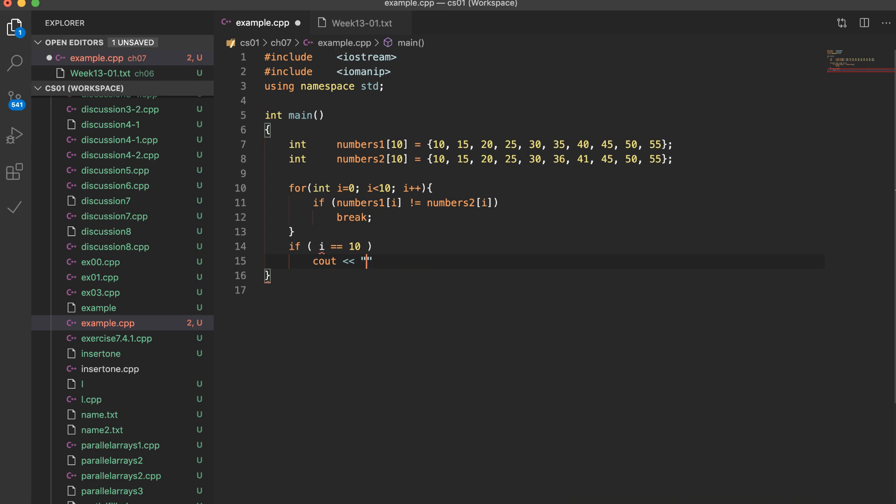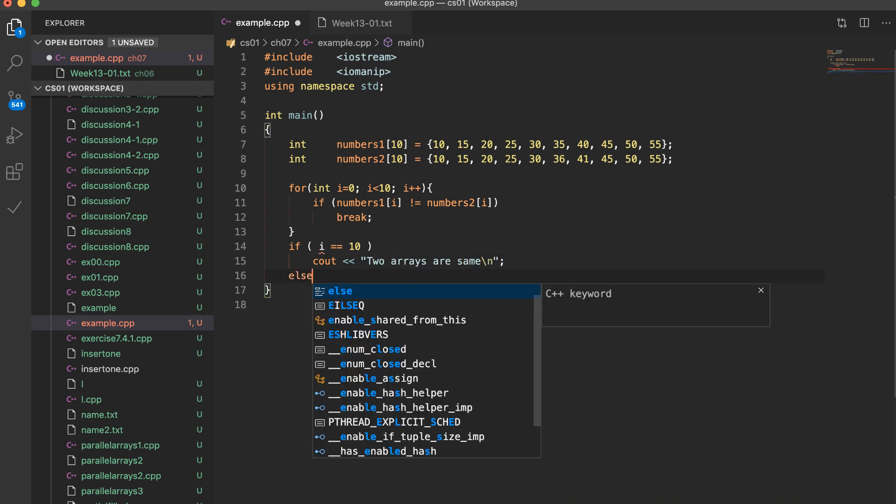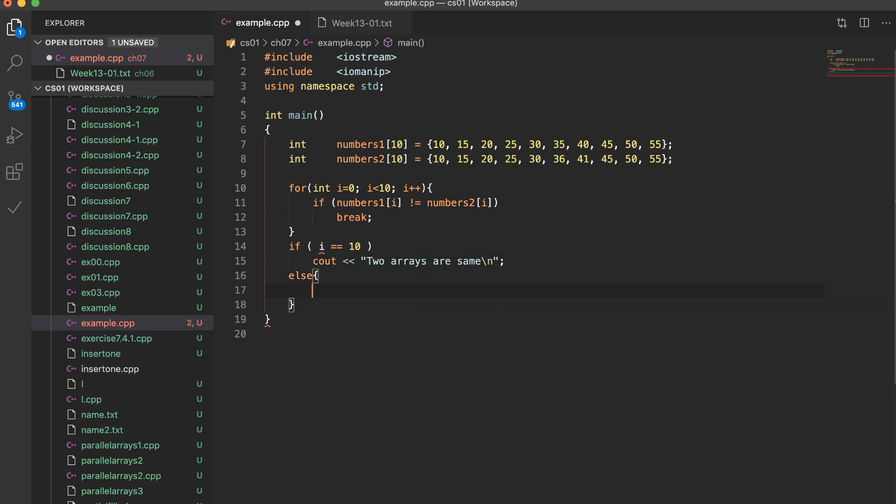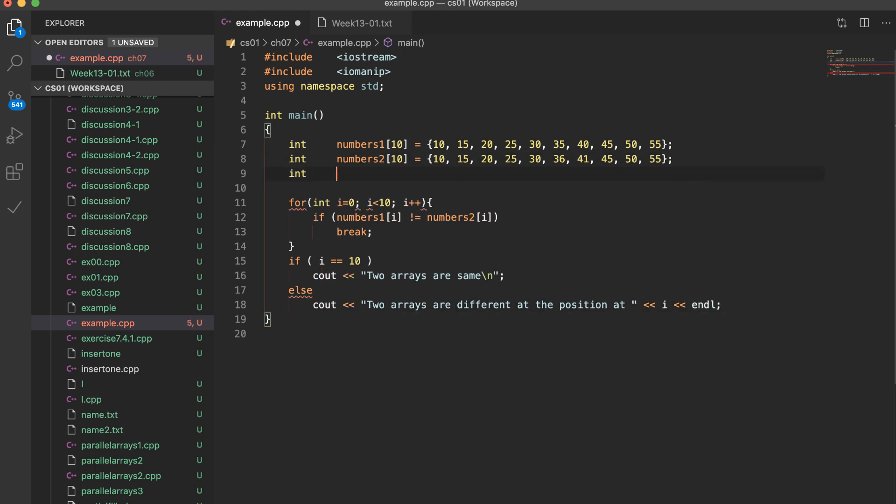At that moment, when we are out of loop, if the index is 10, it means we finish the full iteration. It says that two arrays are same. If the index is less than 10, it means that two arrays are different. And also, the first different index value has the variable i. When we run this program, we can find the result like that.